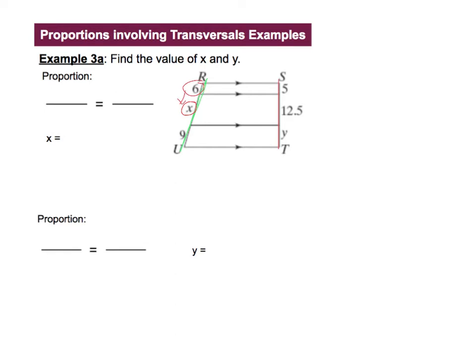So 6 over X, the top section to the middle section, and then just go in the same order on the other transversal. So that would be the 5 over 12.5. That's your proportion.